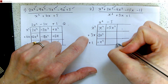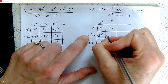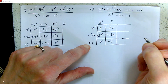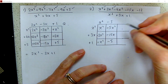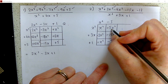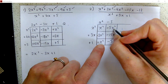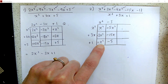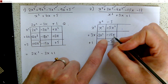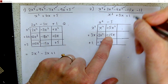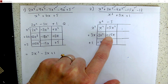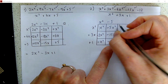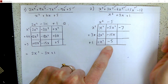We fill in the boxes beneath by multiplying, so we get minus 15x and minus 5. We now have a total of x squared minus 5x squared, which gives us minus 4x squared — so that's done. We've got minus 15x — that's done. And we've got minus 5, but we need minus 12, so we need to take away 7.